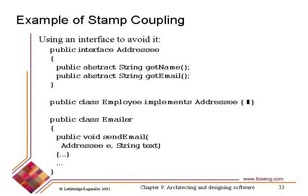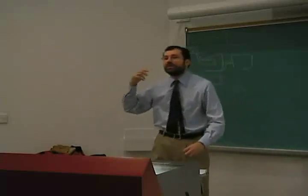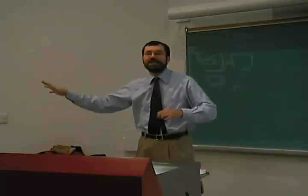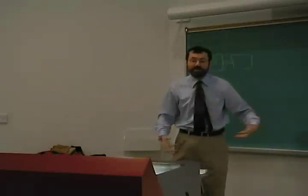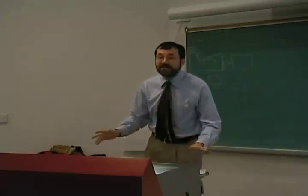I can declare any addressee as the person to whom I'm sending the email, and that could be implemented by other classes in other systems. I'm coupled to my addressee interface, but that's light, and it can be part of my emailing package. The key is I don't want to tie myself to an employee human-resources-type package — that's a silly coupling. I can tie myself to an addressee interface because that has to do with emailing anyway. So two different strategies for reducing stamp coupling.